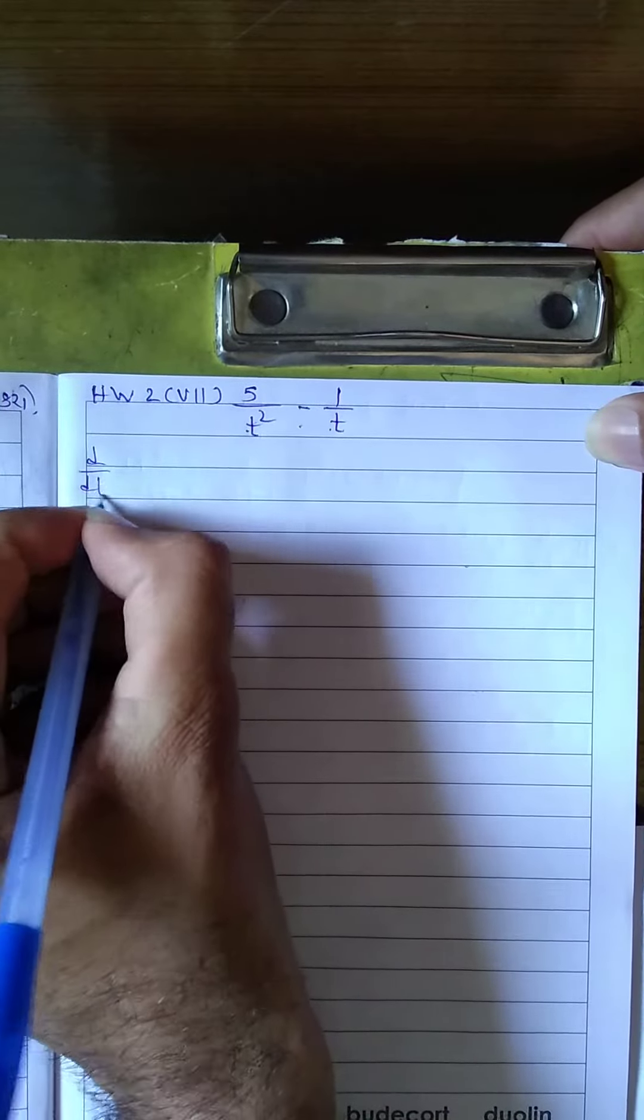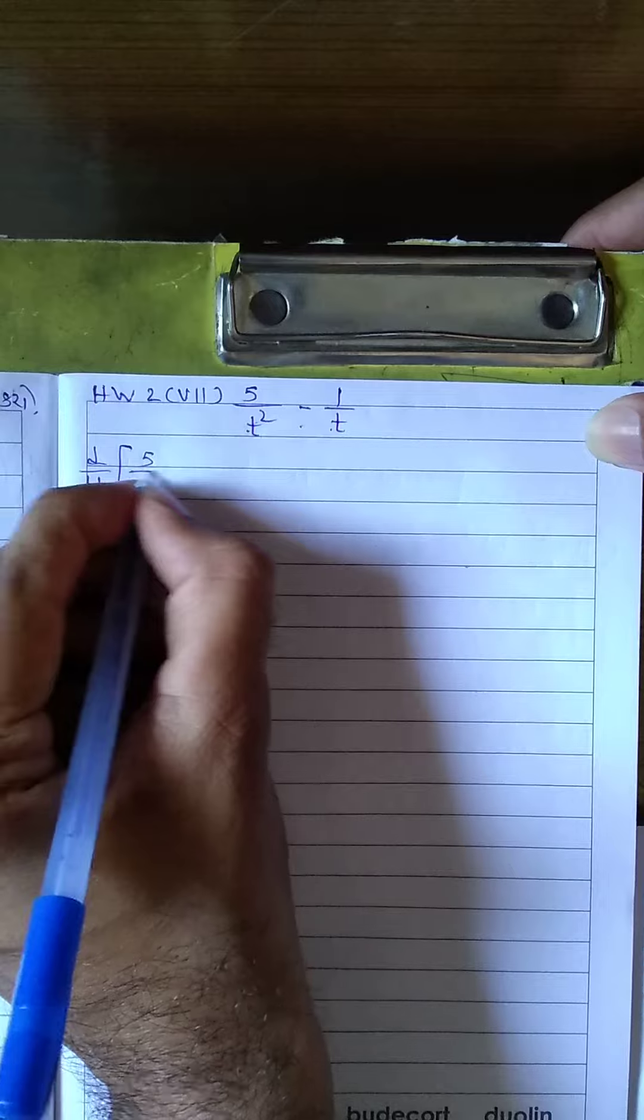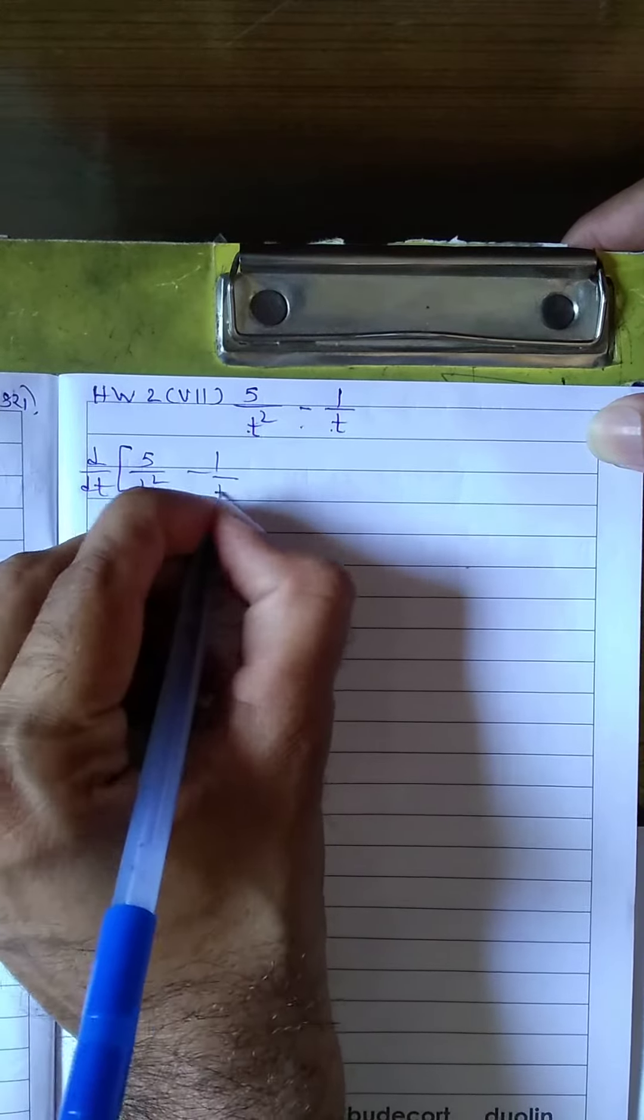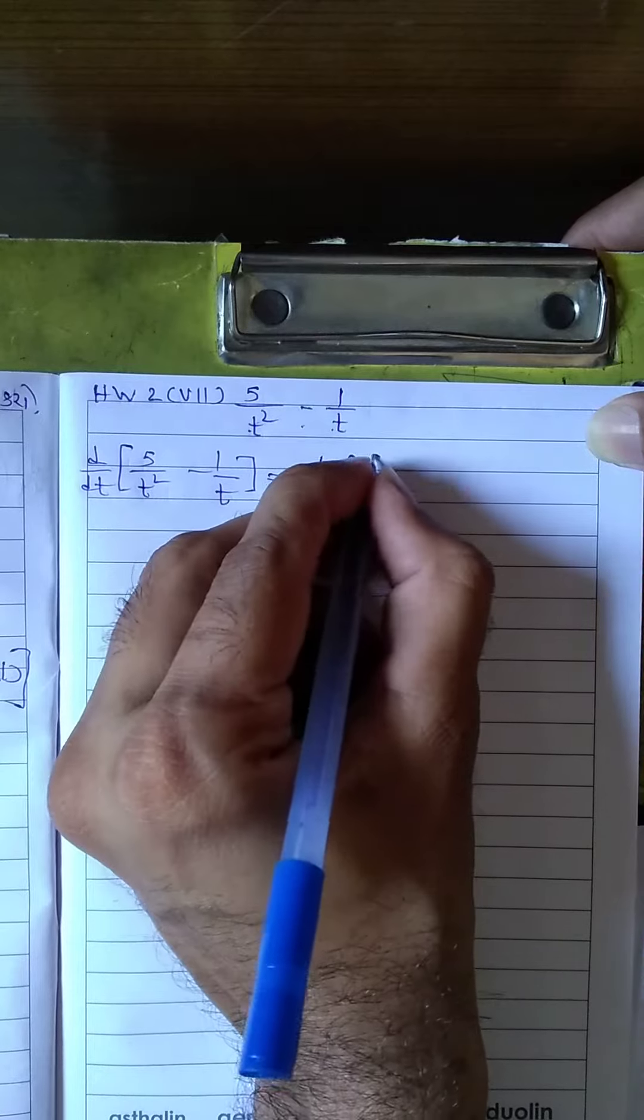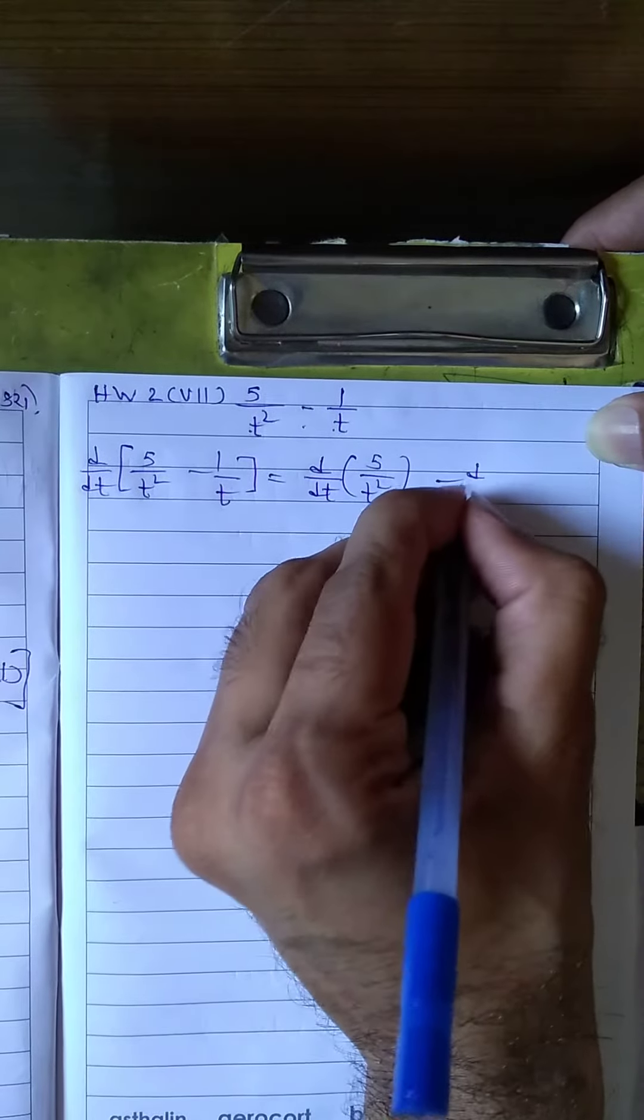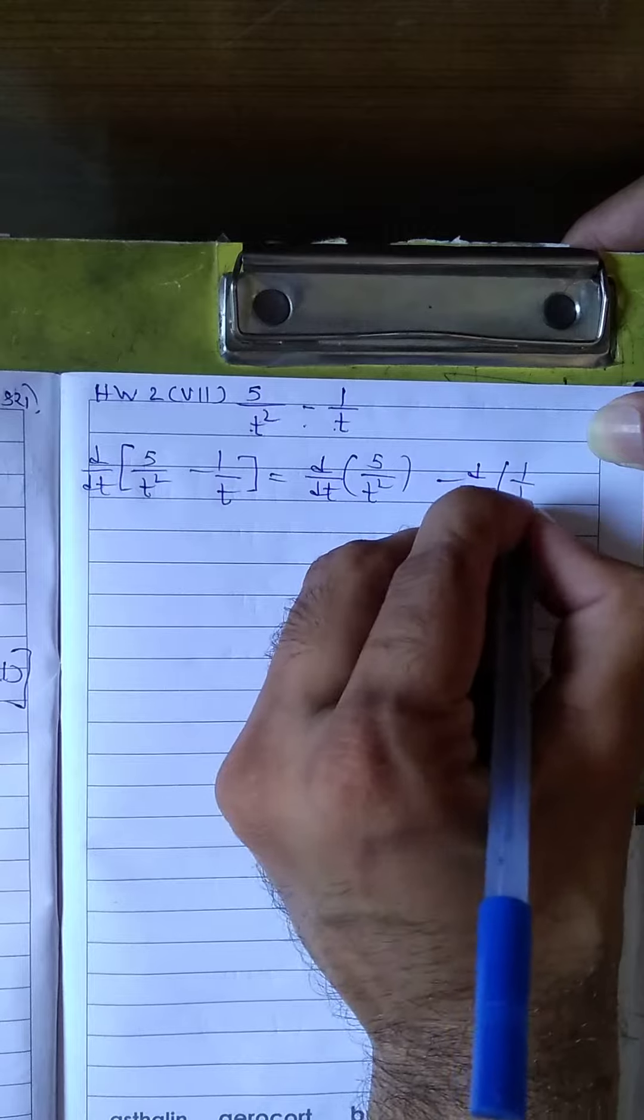d by dt of 5 upon t square minus 1 upon t. Separating the terms: d by dt of 5 upon t square minus d by dt of 1 upon t.